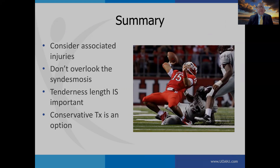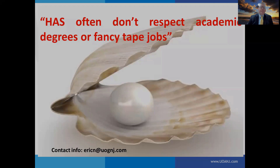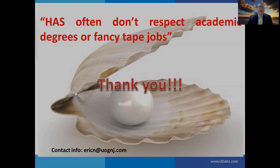In summary: consider the associated injuries with ankle sprains, don't overlook the syndesmosis, and pay attention to tenderness over the syndesmosis. Tenderness length is important not just for identifying the degree of syndesmotic injury, but also for identifying the location of the interosseous ligament. Conservative treatment is an option, but make sure there is at least some component of non-weight-bearing in the early phase. As a parting pearl: high ankle sprains don't respect academic degrees or fancy tape jobs. If you have any questions, please feel free to email me. Thank you for your attention.